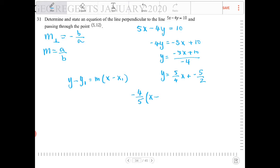That's 5 comma 12. So x1, y1, x1 is 5, y1 is 12. So the equation is, giving myself a little more room, y minus 12 is equal to negative 4 fifths, x minus 12. And actually, you can leave your answer in this form here.